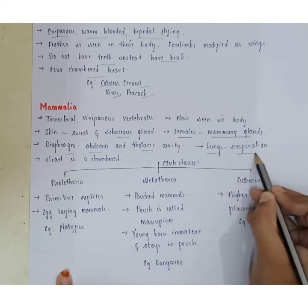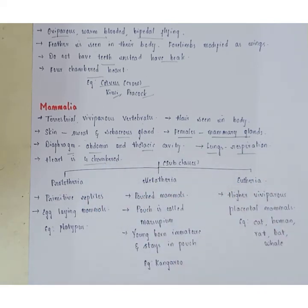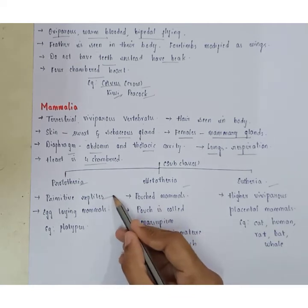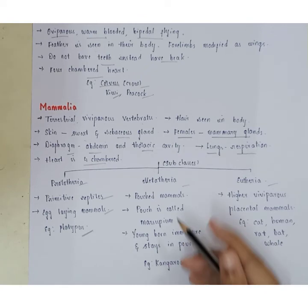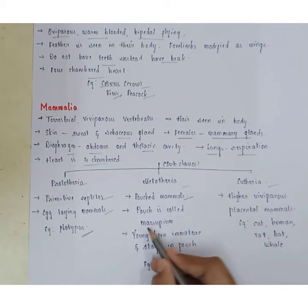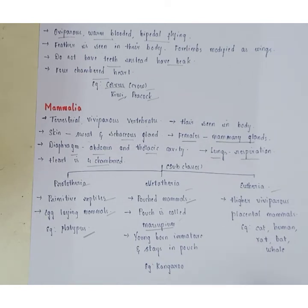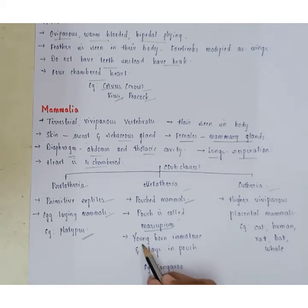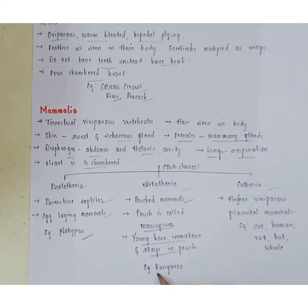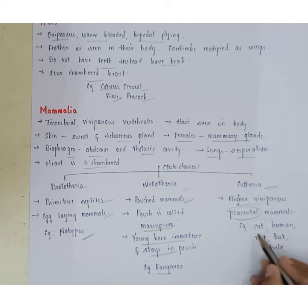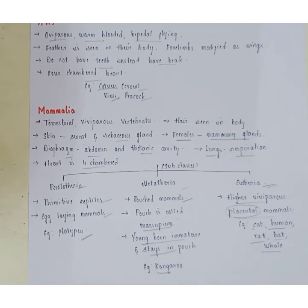Mammals use lungs for respiration and have a four-chambered heart. They are classified into subclasses: Prototheria (primitive, egg-laying mammals such as platypus), Metatheria (pouched animals — the pouch is called marsupium; newborns are immature and stay in the mother's pouch; example: kangaroo), and Eutheria (higher viviparous placental animals; examples include cat, humans, rat, bat, and whales).